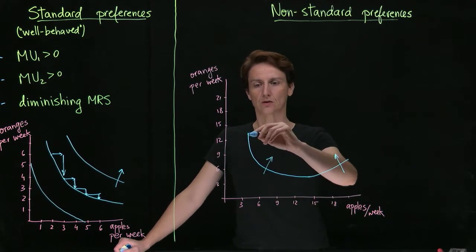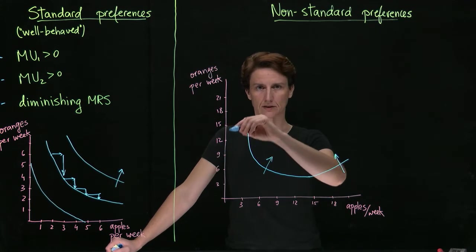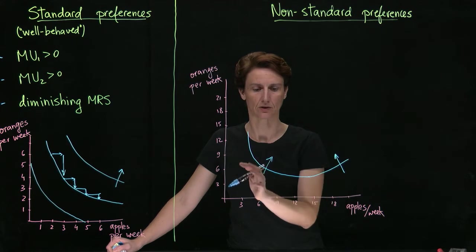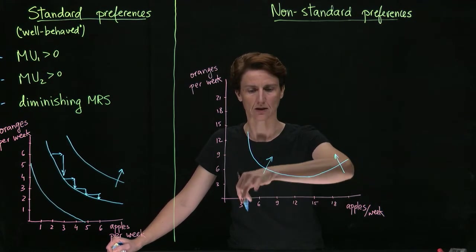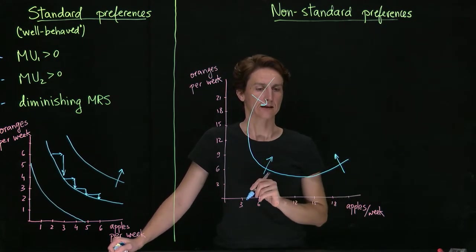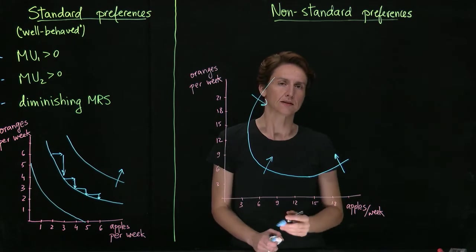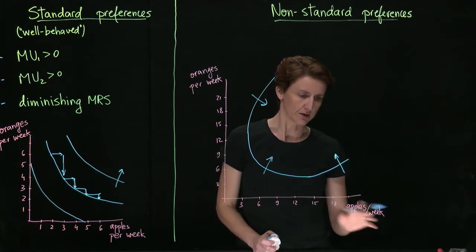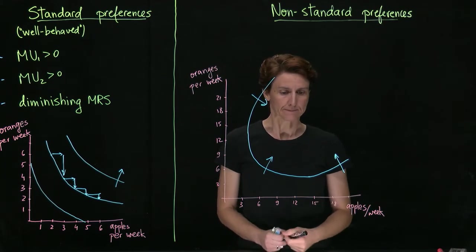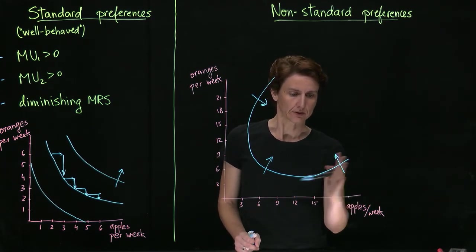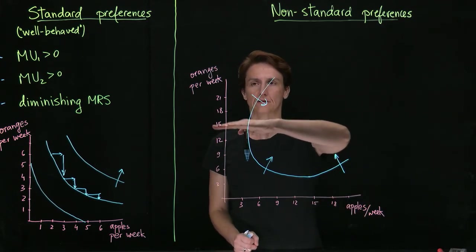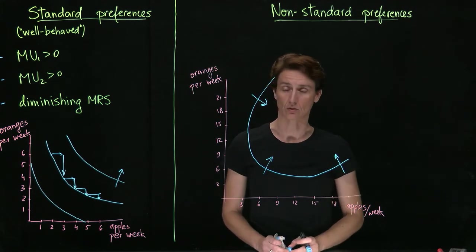That means upward sloping indifference curves. Same here - if once we weren't interested in oranges anymore we had to keep eating more, the way to compensate us for it would be to give us more apples which we're still interested in. So when indifference curves are upward sloping, that means that either one or the other of the goods has negative marginal utility. In this example, to the right of this point we have negative marginal utility of apples, and above this level we have negative marginal utility of oranges.